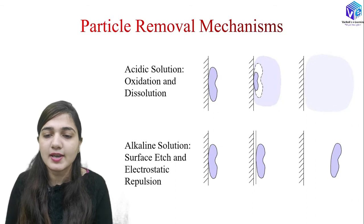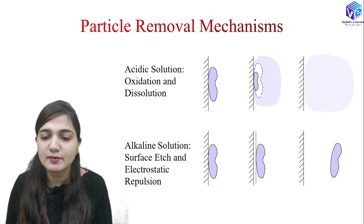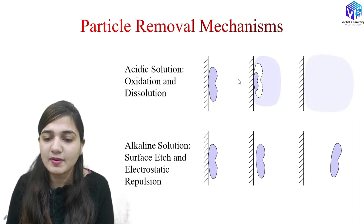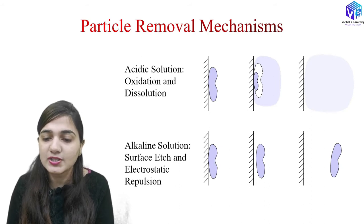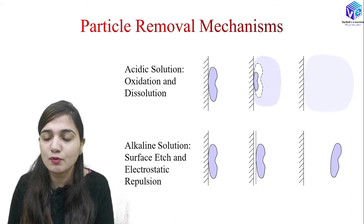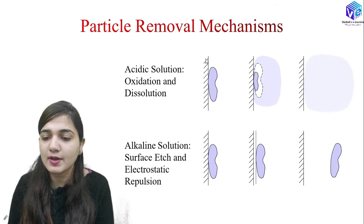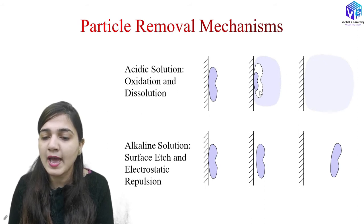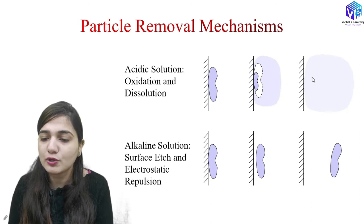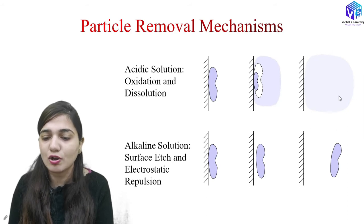This is how we have the particle removal mechanism. Here we use the acidic solution in which I am doing the oxidation, and then we use dissolution to remove the particle. You can see on our wafer surface we have the contaminant particle, and first I am doing the oxidation and then dissolving this particle inside the acidic solution.